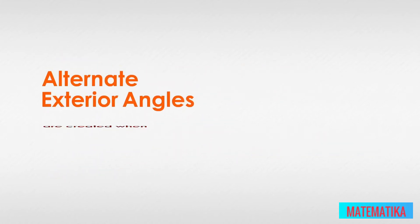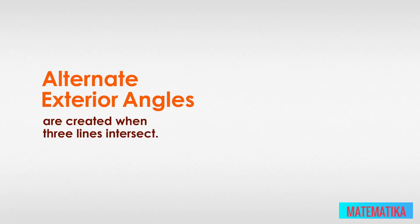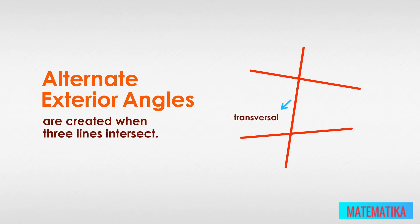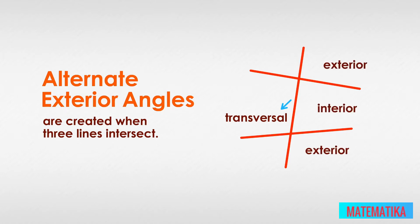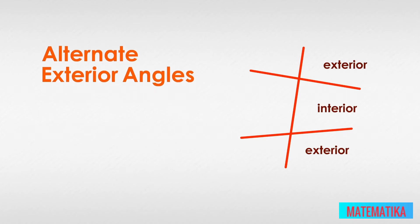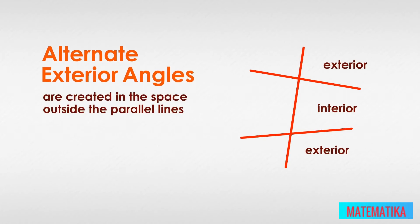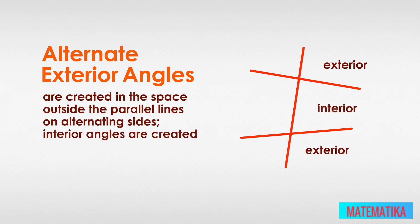Alternate exterior angles are created when three lines intersect. A line that crosses two or more other lines is called a transversal. Often two of the lines will be parallel, setting up some interesting angles with the transversal. When a transversal crosses two other lines, it creates an exterior and interior for the parallel lines. Alternate exterior angles are created in the space outside the parallel lines on alternating sides. Interior angles are created in the space inside the parallel lines.